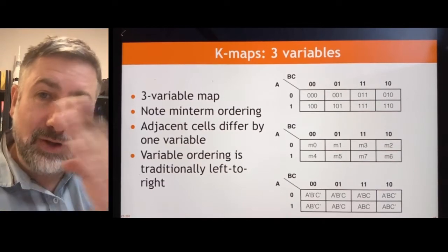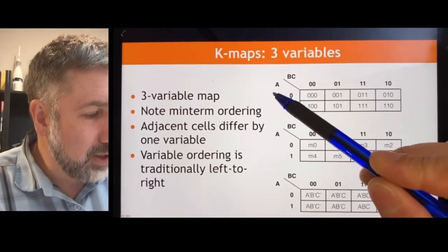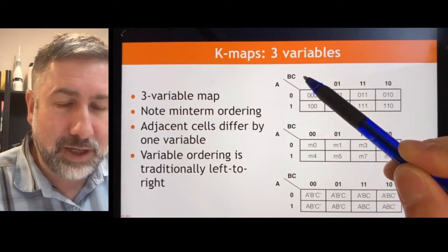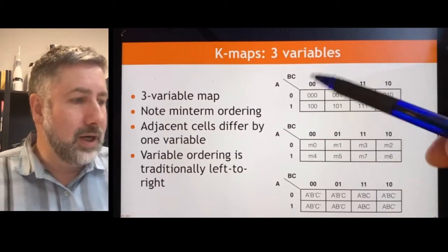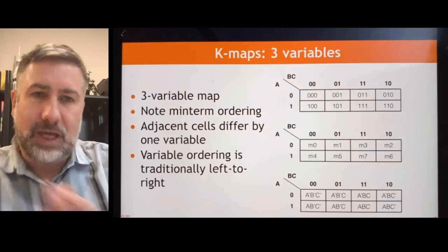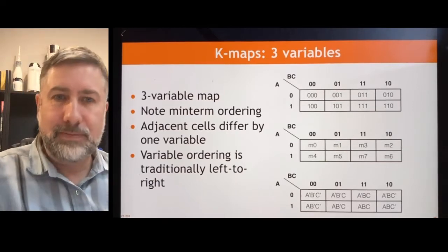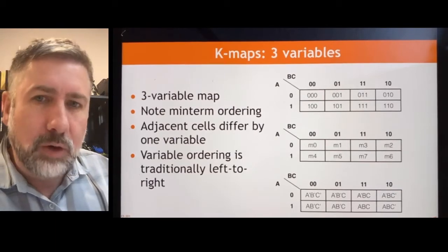They're listed in a little bit of an interesting order intended so that adjacent cells differ by only one variable. And traditionally, when we write out the variables in a Karnaugh Map, we list them out in this direction. A, B, C. From left to right across this line. Now, you can put the variables at any place you want. You can put B, C, A. But that's going to make it a little bit more work to go from the truth table into the Karnaugh Map. So it's good to sort of follow that tradition.